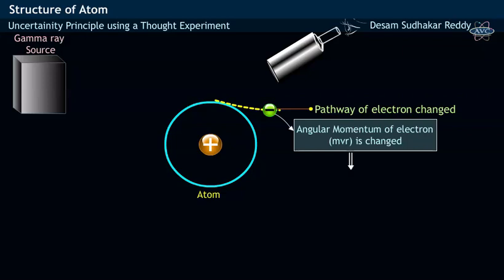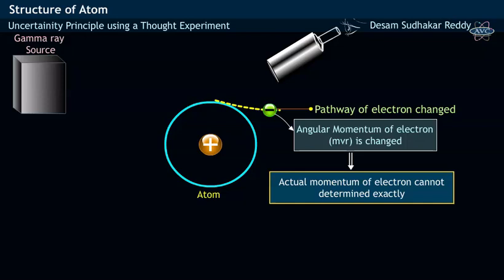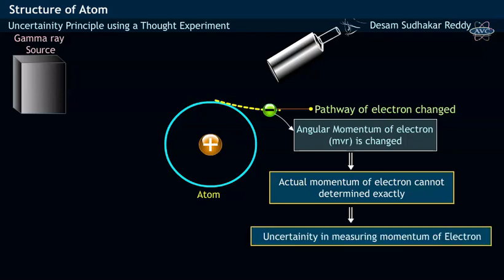As a result of which, the actual momentum of electron cannot be determined exactly. That is, there exists an uncertainty in measuring the momentum of an electron.